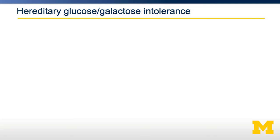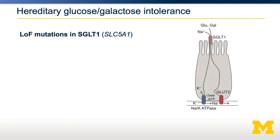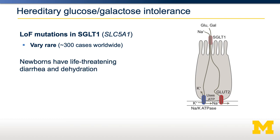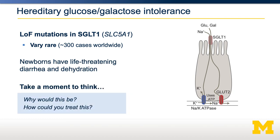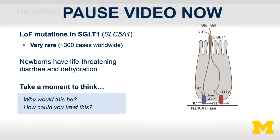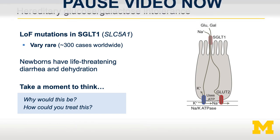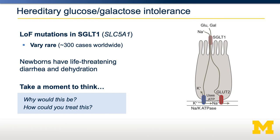So what would happen if this went wrong? Let's describe a condition called glucose-galactose intolerance. This is often caused by loss-of-function mutations in a gene called SLC5A1, which encodes for SGLT1 — the active transporter on the apical membrane of the enterocyte. This condition is quite rare, with only about 300 cases described worldwide. However, it causes life-threatening diarrhea and dehydration in newborns. Many newborns have a high level of lactose in their diet, which is broken down into glucose and galactose. SGLT1 is critical for getting the last of the glucose and galactose out of the lumen and into the enterocyte.